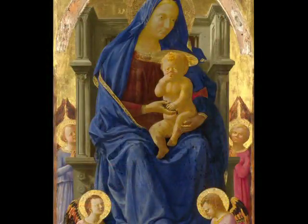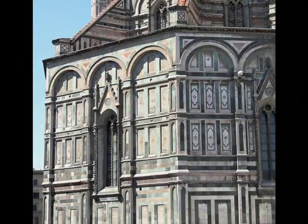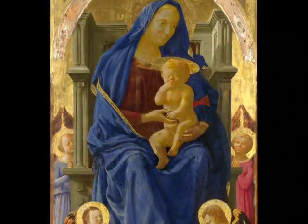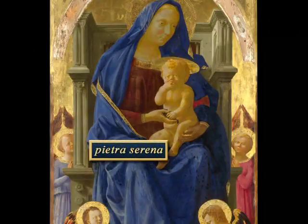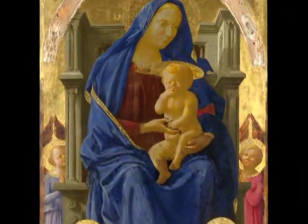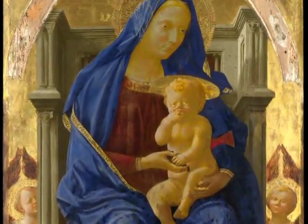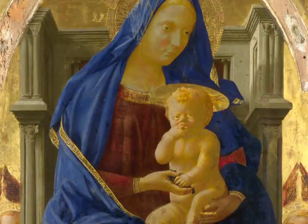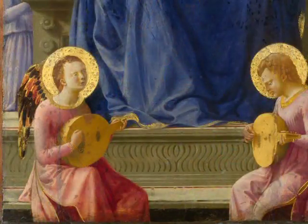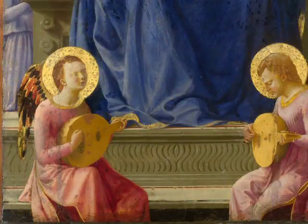The throne that the Virgin and Child sit on resembles Brunelleschi's architecture. One of the ways it does so is the choice of depicting it as if made from pietra serena, a gray-toned sandstone used in Florence. Also, the use of the classical orders for the columns of the throne — composite, Corinthian, and Ionic — would echo Brunelleschi's own practice. Even the decoration of the dais on which the throne rests resembles ancient Roman sarcophagus designs, and this too would hint at the future death of the child. Brunelleschi is often credited with having designed the system of linear perspective in painting — he was an art theorist as well as an architect.